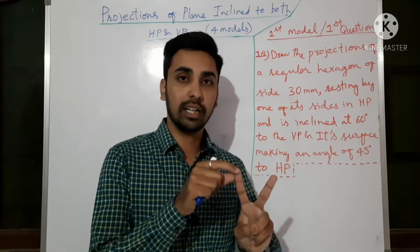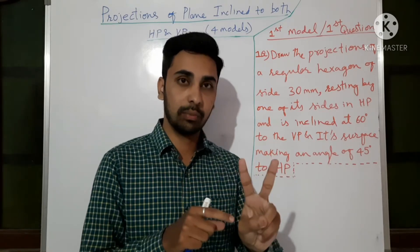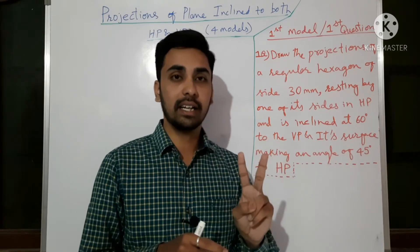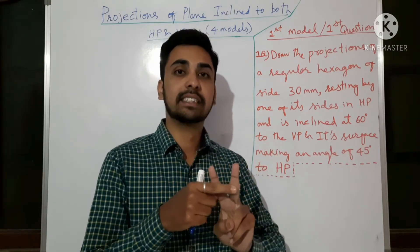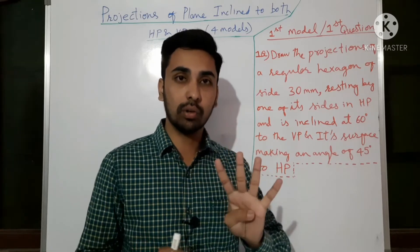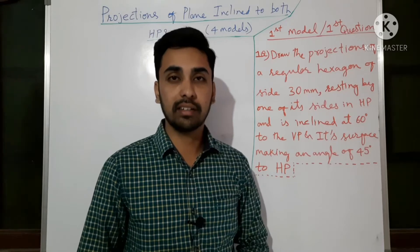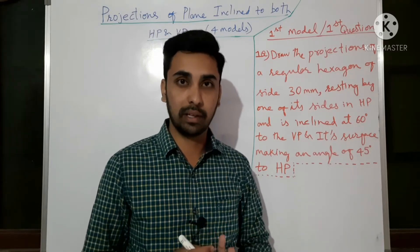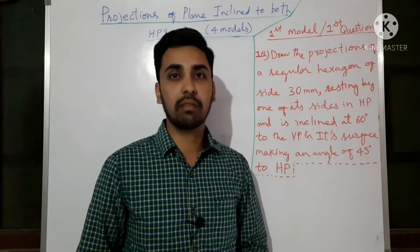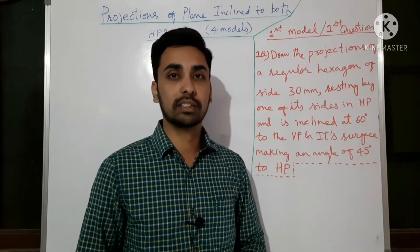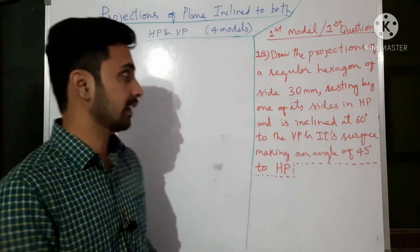So the categories are: edge resting and corner resting — edge is also called side, the meaning is the same. Then, where are they resting — in HP or in VP? Edge or corner resting in HP gives two cases; edge and corner resting in VP gives two more cases. So total four cases, four models. We will do them one by one. This is edge resting in HP — the first category. Later, corner resting in HP, then edge resting in VP, then corner resting in VP.